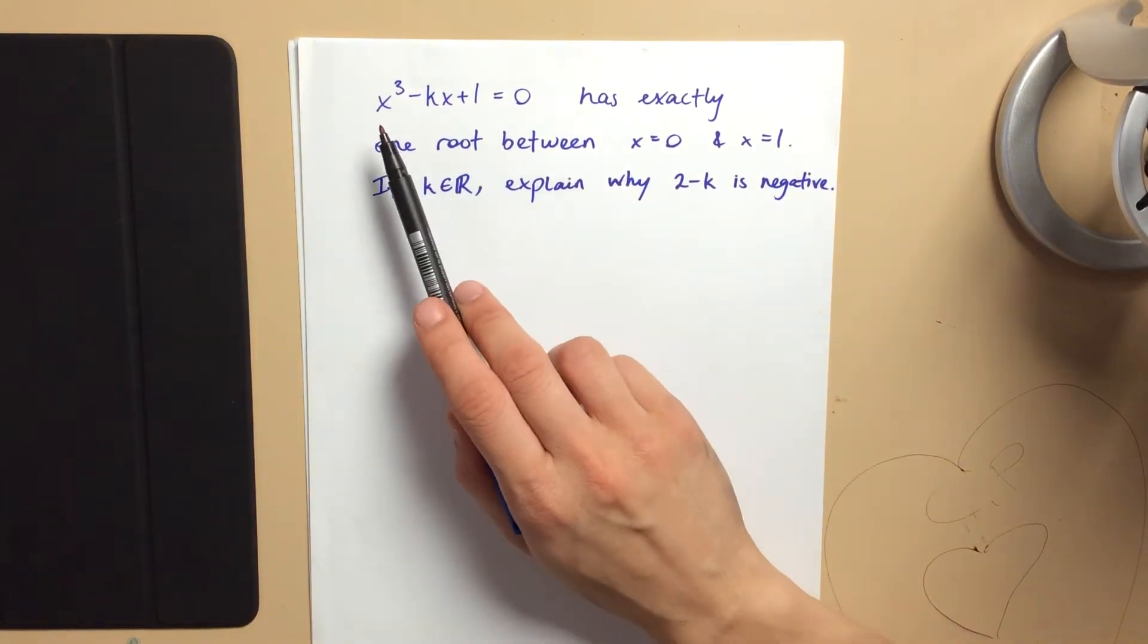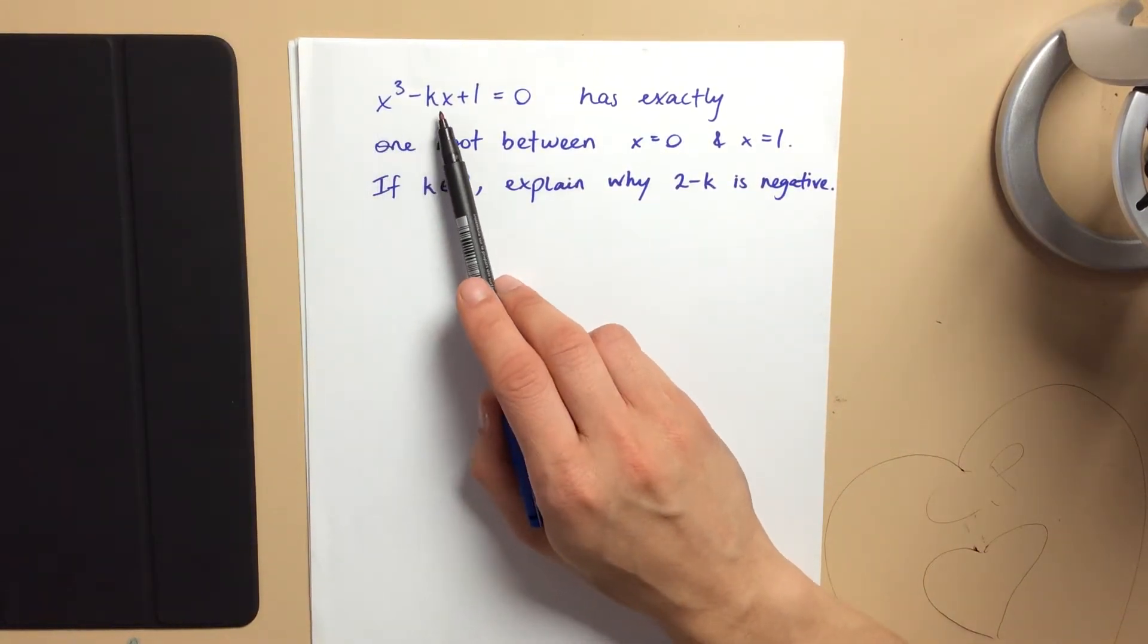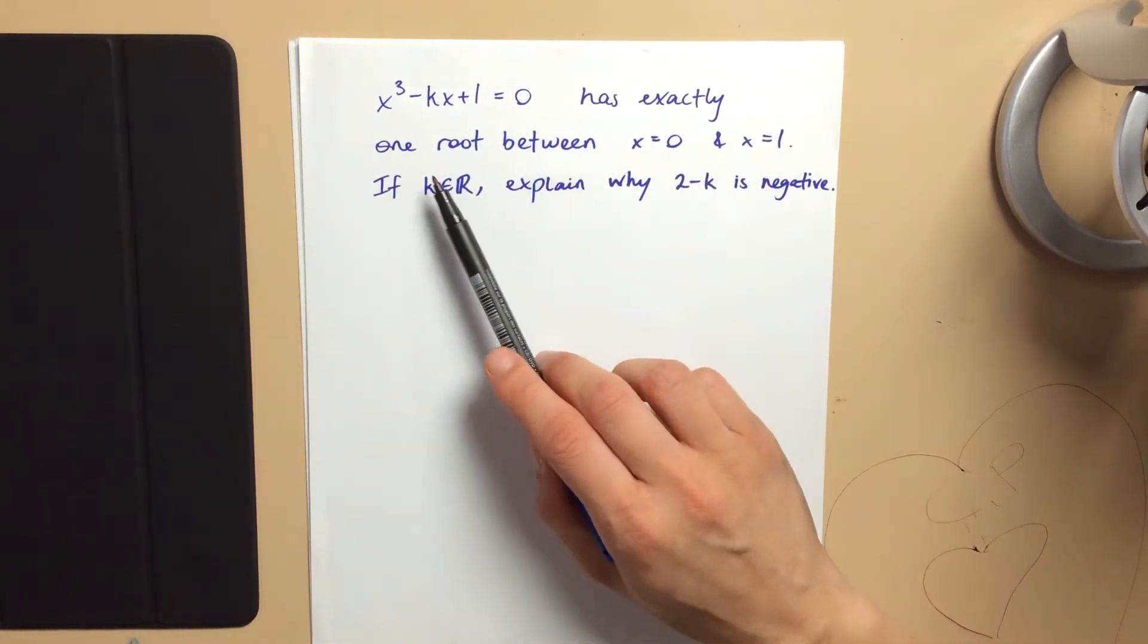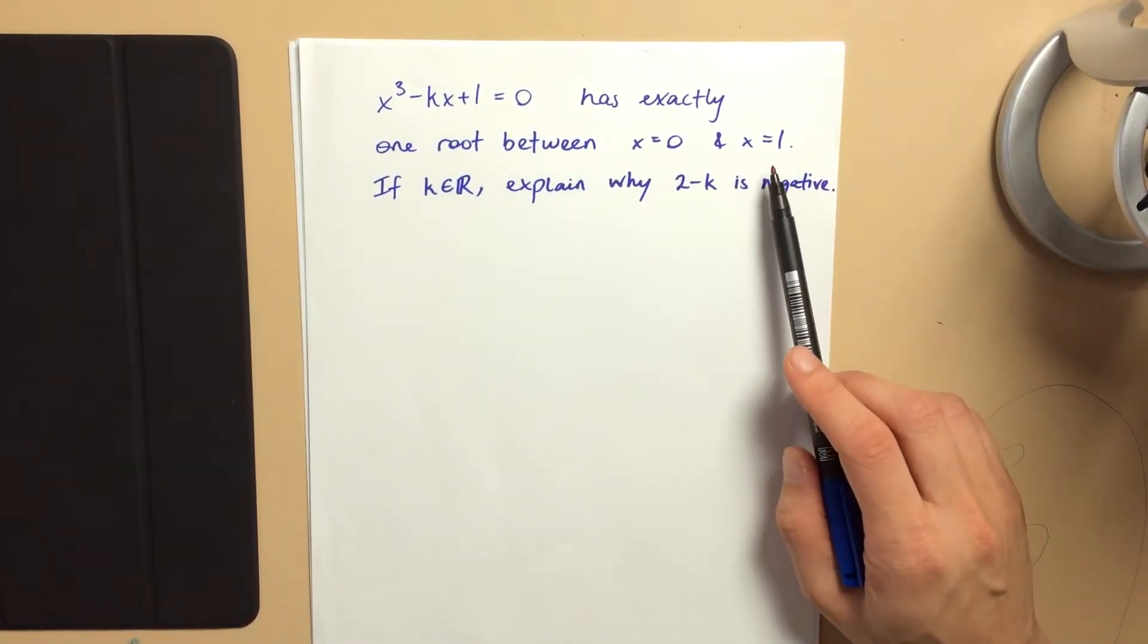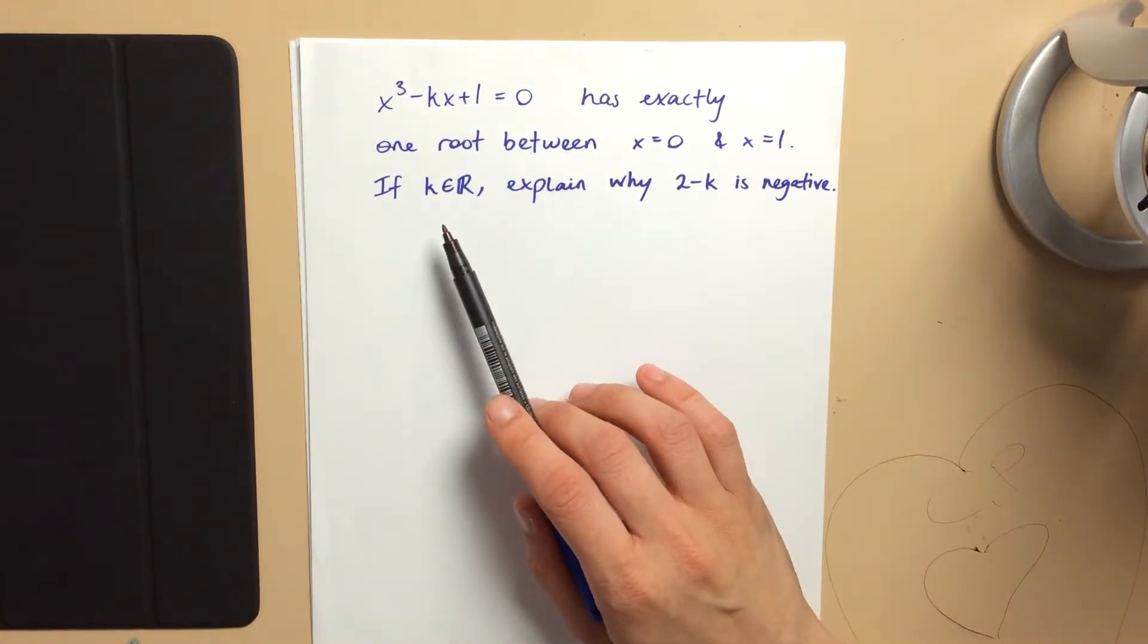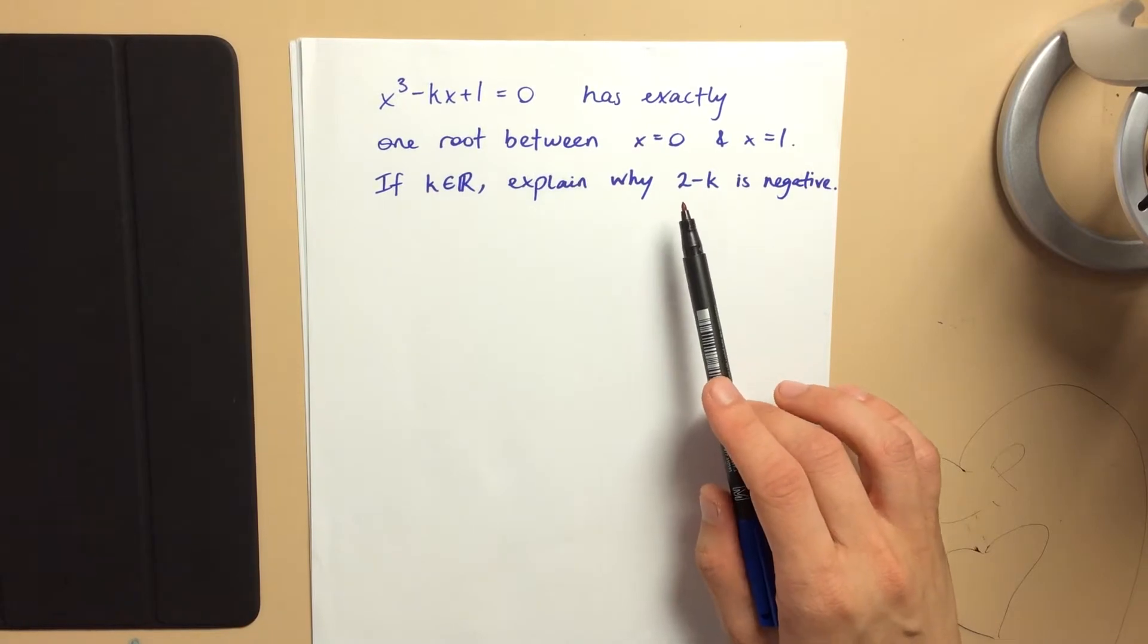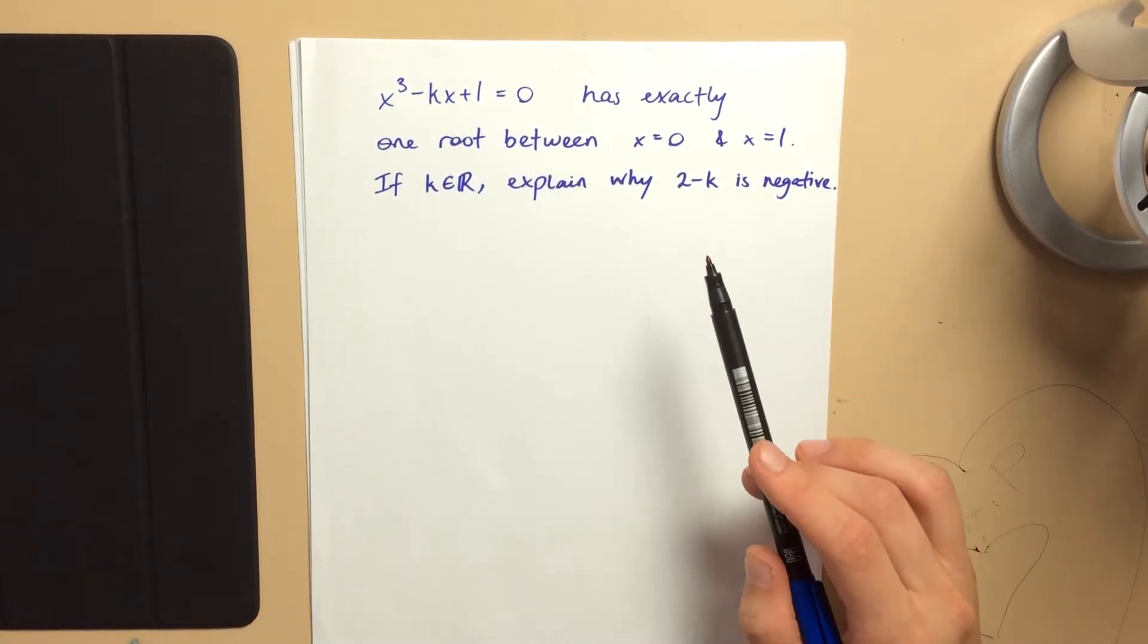Here's an interesting polynomials question. For this x cubed minus kx plus 1 equals 0 polynomial, if it has exactly one root between x equals 0 and x equals 1, then being that k is some arbitrary constant, explain why 2 minus k must be negative.